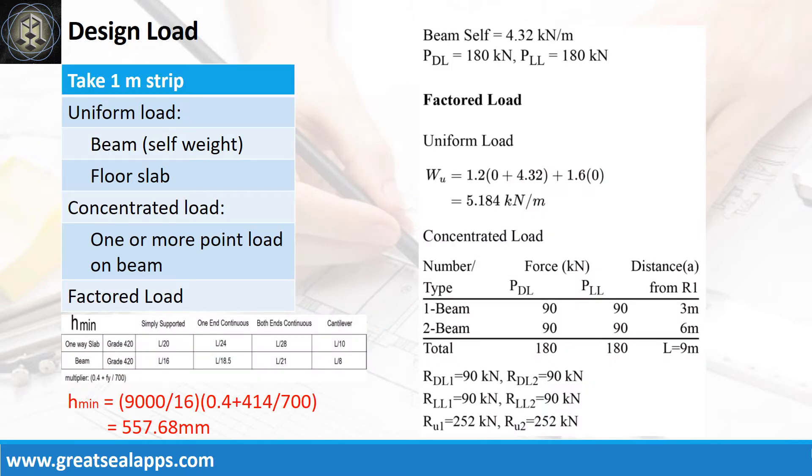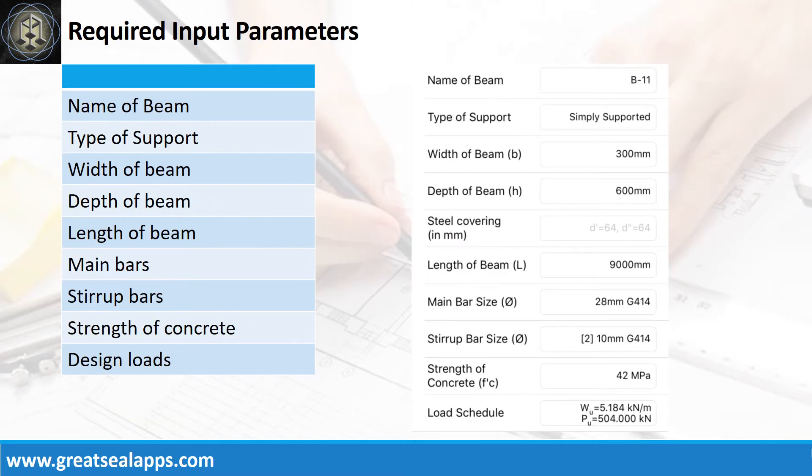The beam self-weight is 4.32 kN per meter, for a factored uniform load of 5.184 kN per meter. The beam carries two concentrated loads, each with dead load of 90 kN and live load of 90 kN, for a total factored concentrated load of 504 kN. Enumerate input parameters required.